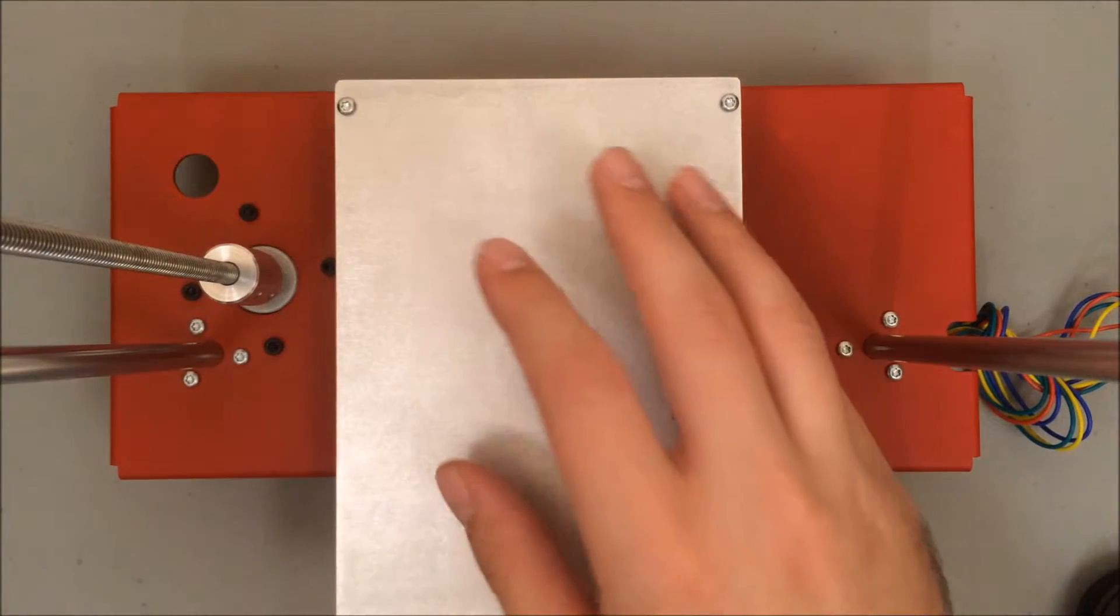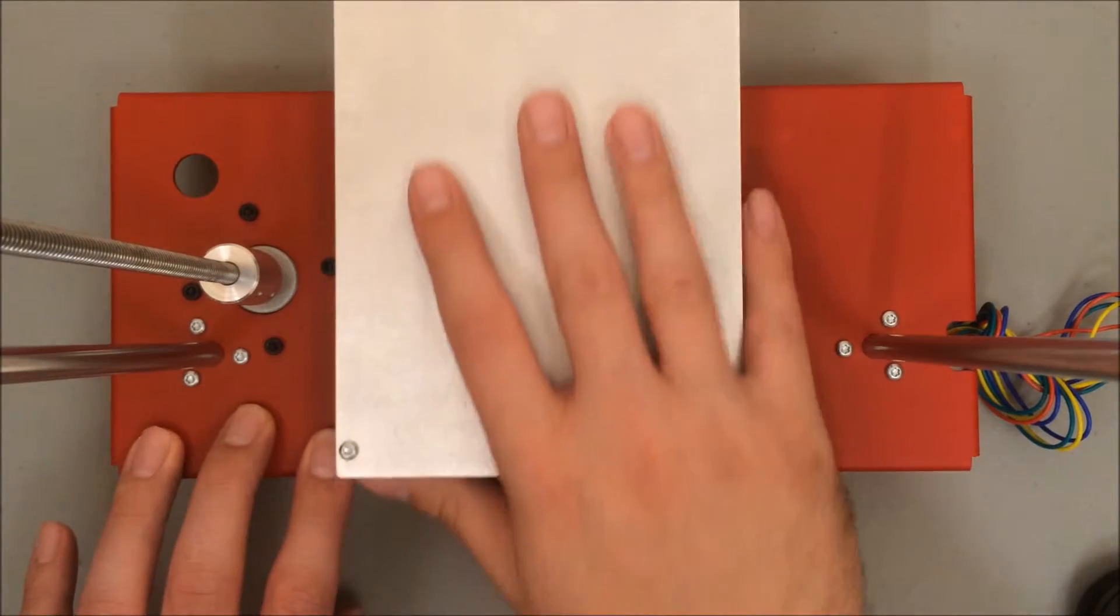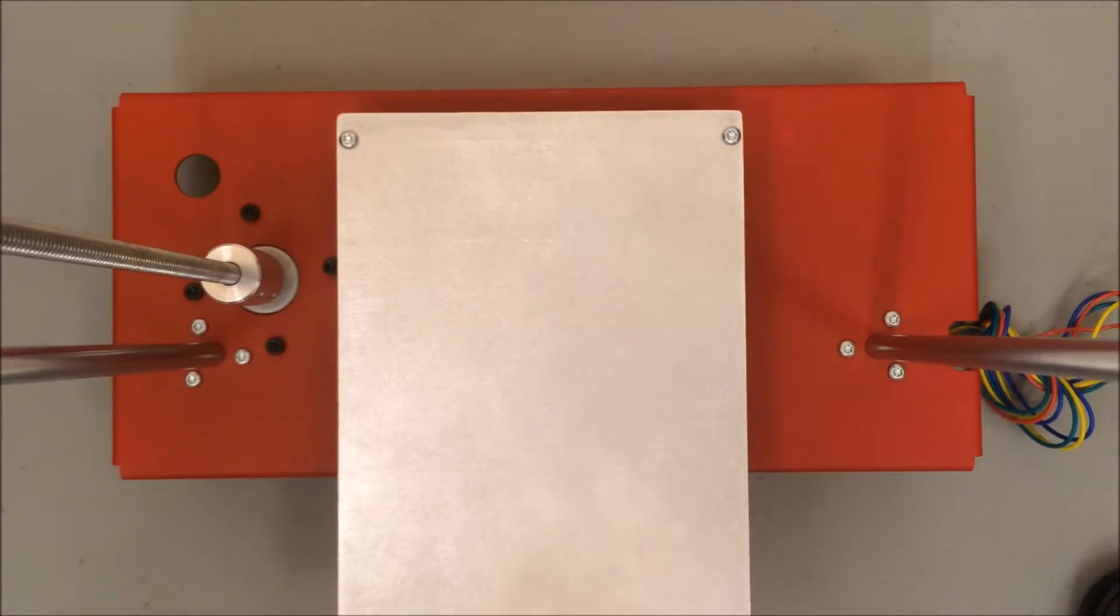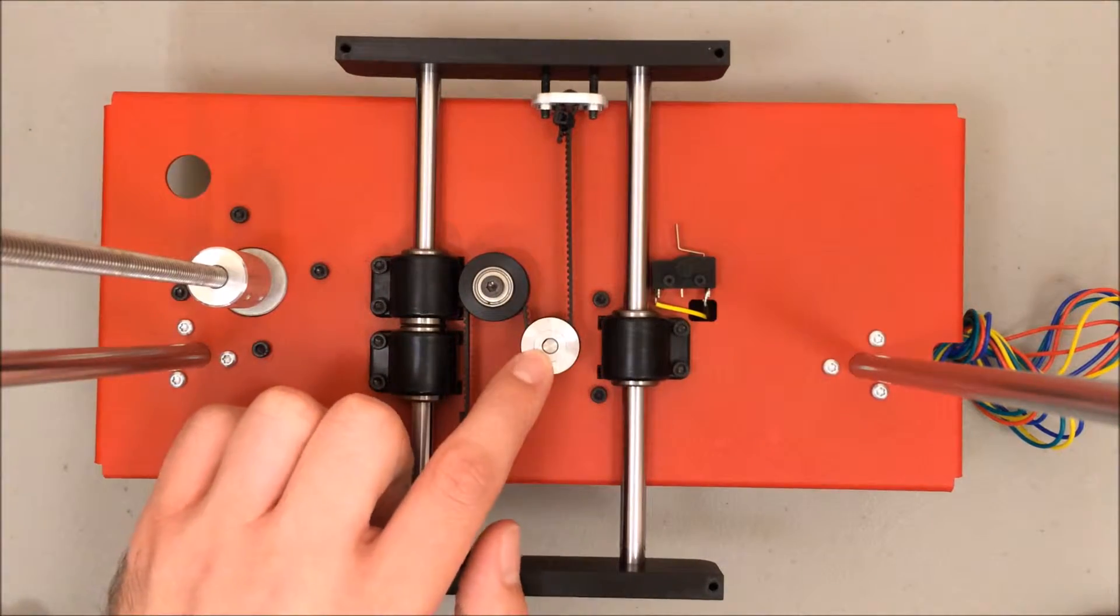Here is the bed of the printer. This is where your objects are actually built. This moves in the y-axis. Underneath the bed, you can see the belt that actually pulls the bed back and forth and wraps around our y-axis motor.